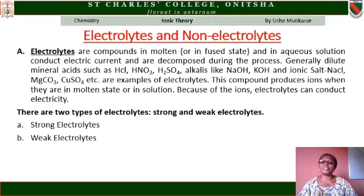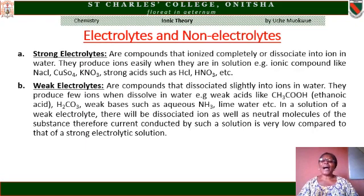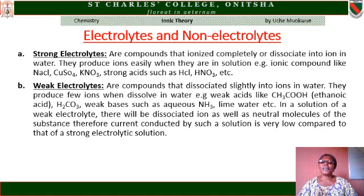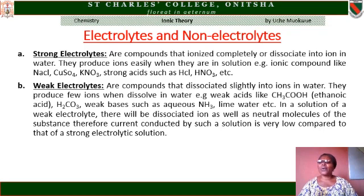We have two types of electrolytes: strong and weak electrolytes. Strong electrolytes are compounds that ionize completely or dissociate into ions in water. They produce ions easily when they are in solution. Examples of strong electrolytes include ionic compounds like sodium chloride, copper(II) tetraoxosulphate(VI), potassium trioxonitrate(V), and strong acids like hydrochloric acid and trioxonitrate(V) acid. Weak electrolytes are compounds that dissociate slightly into ions in water. They produce few ions when dissolved in water. Examples are weak acids like ethanoic acid and trioxocarbonate(IV) acid, and weak bases like aqueous ammonia and lime water.